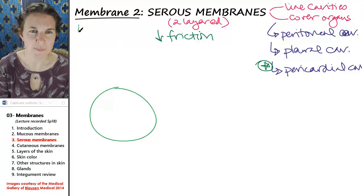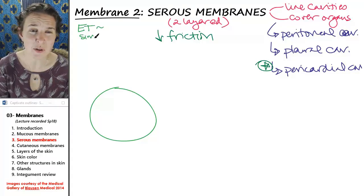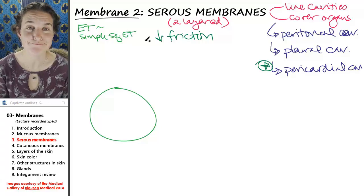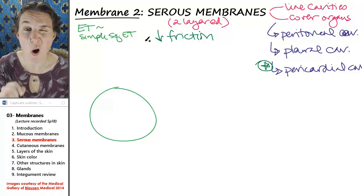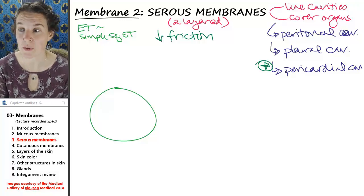The thing starts out as a balloon, a bubble of epithelial tissue. The epithelial tissue is simple squamous epithelium every time. So your serous membrane always has a layer of simple squamous epithelium.